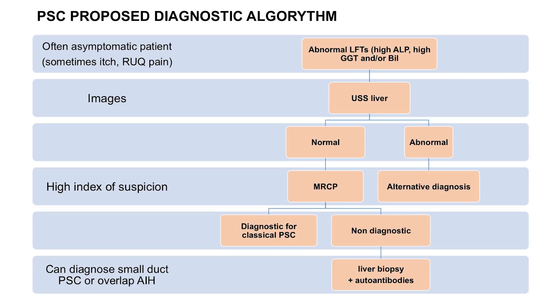And what about liver biopsy - does that have a role? Routine liver biopsy is no longer necessary for the diagnosis of PSC. But there are situations where it can still be helpful. One is in the diagnosis of small duct PSC - patients who have the typical clinical features but with a normal MRCP - where liver biopsy can sometimes show histological changes consistent with PSC, and it typically has a more benign clinical course. The other situation is if an overlap syndrome with autoimmune hepatitis is suspected, where liver biopsy can show features of autoimmune hepatitis.